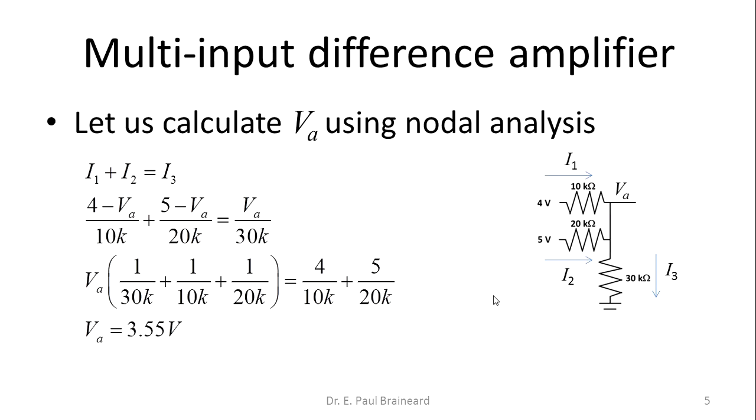Now this is nothing but a simple circuit theory problem. So here is a 4V source, 5V source, and this voltage, the node voltage I have assumed to be VA. Now if you use KCL at this particular junction, it is I1 plus I2 equals I3.